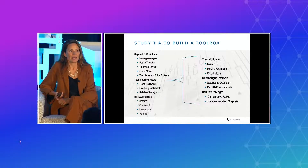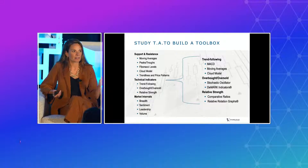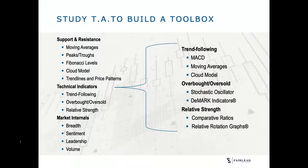There are thousands of indicators in TA, all embedded in mathematical components. We organize them into what we call our technical toolbox. We divide it into three categories: support and resistance, a suite of technical indicators, and market internal measures — which originally applied to equities but now also to crypto. I classify technical indicators three ways: trend-following or momentum gauges, overbought/oversold gauges, and relative strength gauges. Having one or two indicators for each category gives you a full swath of what you need.